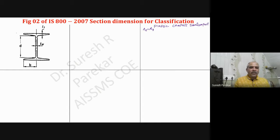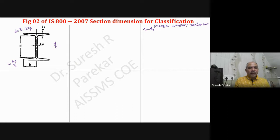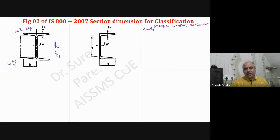For the I-section, the dimensions are: d equals capital D minus 2tf, and b equals bf by 2. We then use two ratios - d by tw and b by tf - to determine the classification. Similarly for the channel section, capital h equals capital D minus 2tf, and b is the total width of the flange.